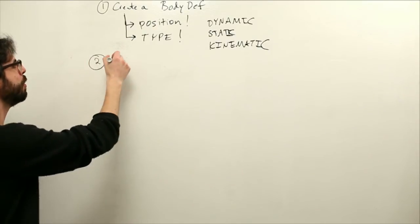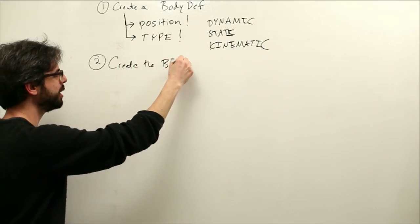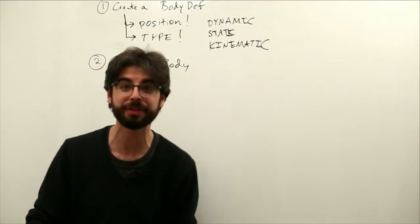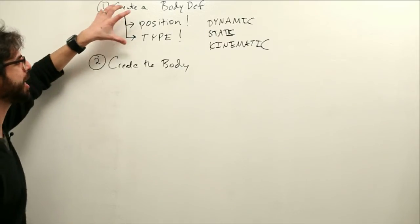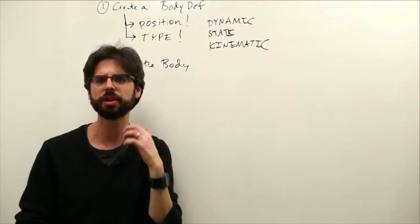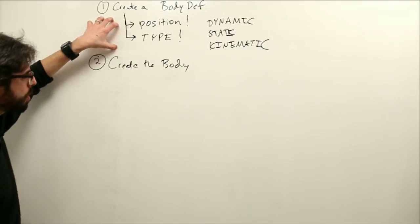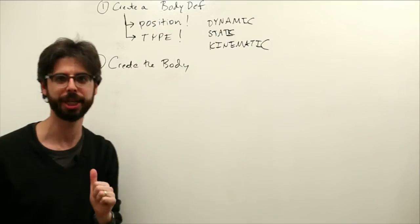Number two, we now need to create the body. So this is simple. This is just going to be one line of code once we've defined the body and all of its parameters. And there's other parameters as well you can define, like you can give it initial velocity and certain things, but we're just looking at these two right now. Then we can create that body object.